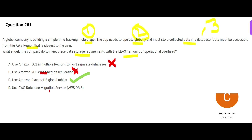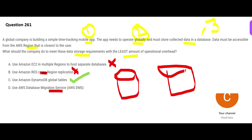Option D says to use the Data Migration Service, but data migration is even slower than replication. You have one database here and then you use data migration to move data to another database — it is very slow for real-time scenarios. The question tells us this is real-time because it is a time-tracking mobile app. If it is time tracking it has to be real-time — otherwise, what is the use of finding out after four hours that you wasted two hours? It has to be real-time.